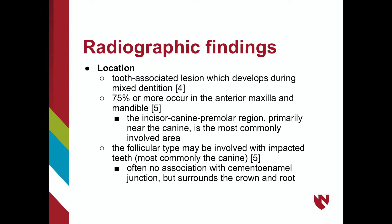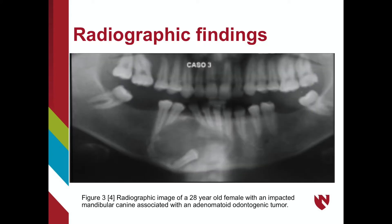Though this is common, a follicular AOT may have a relationship with impacted teeth and does not often demonstrate an association with the CEJ. Rather, the lesion surrounds a greater part of the tooth crown and root. This radiograph is of a 28-year-old female patient with an impacted mandibular canine surrounded by an adenomatoid odontogenic tumor.